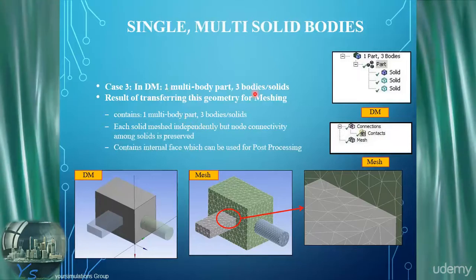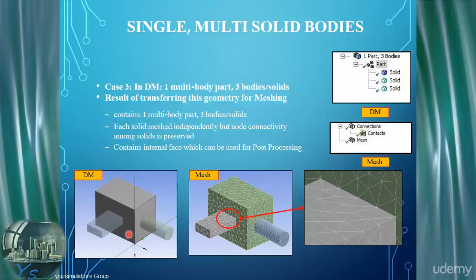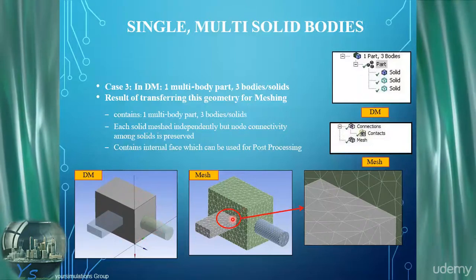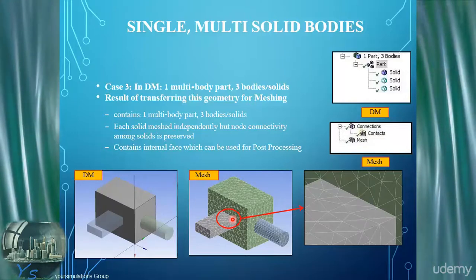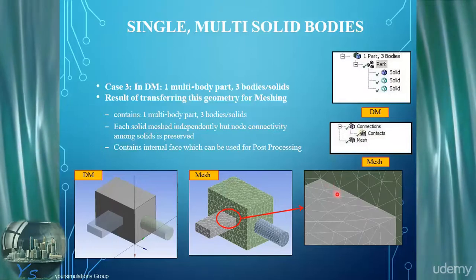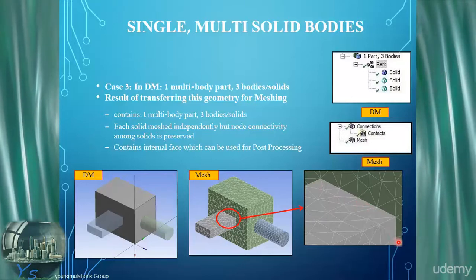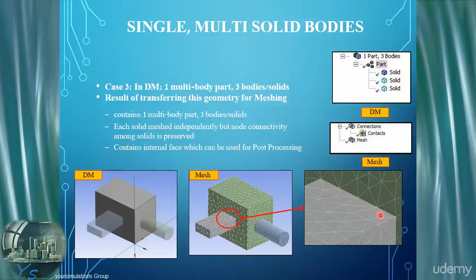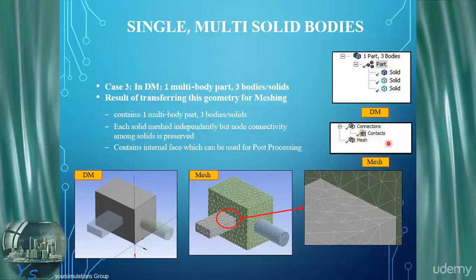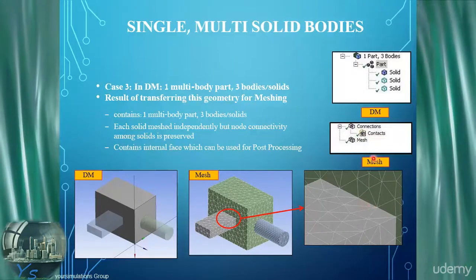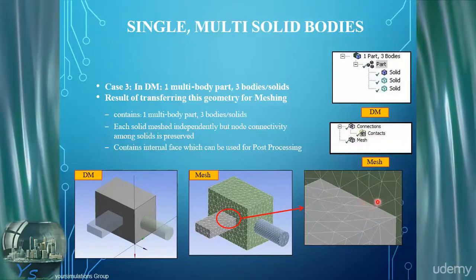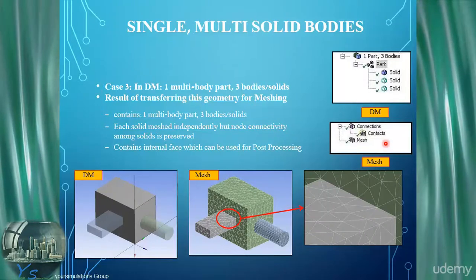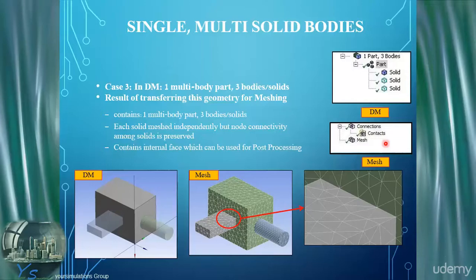The next option is one multi-body part containing three bodies or solids within the same part. Although we have what appear to be three separate regions, it's actually one part. Once taken into meshing, sharing of topology is automatically invoked, performing an imprint operation and sharing the lower topology intermediate face between adjacent bodies within the single part. When we perform the meshing, nodes are shared at the interface. In the contacts region, no contact regions are created because the faces are automatically coincident through shared topology — so the mesh is now fully conformal.